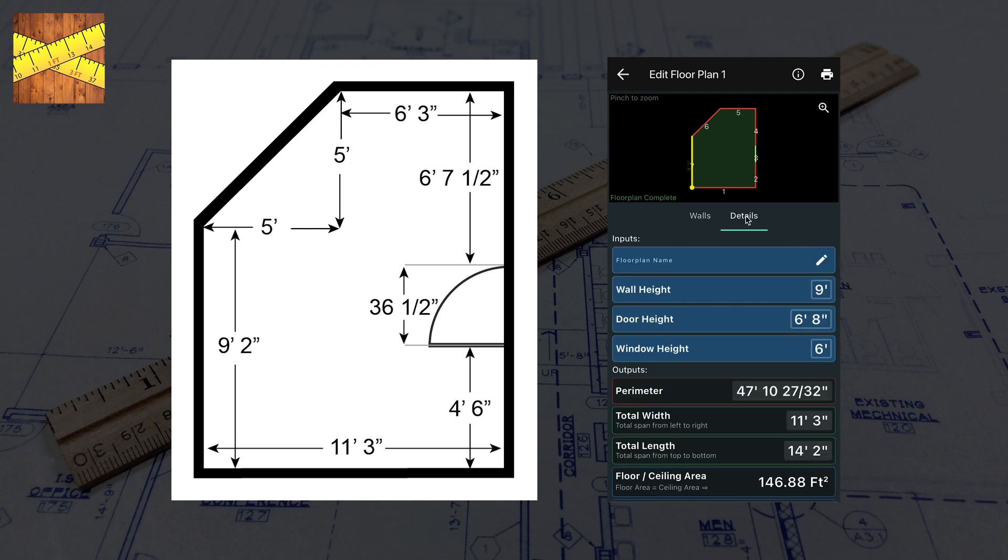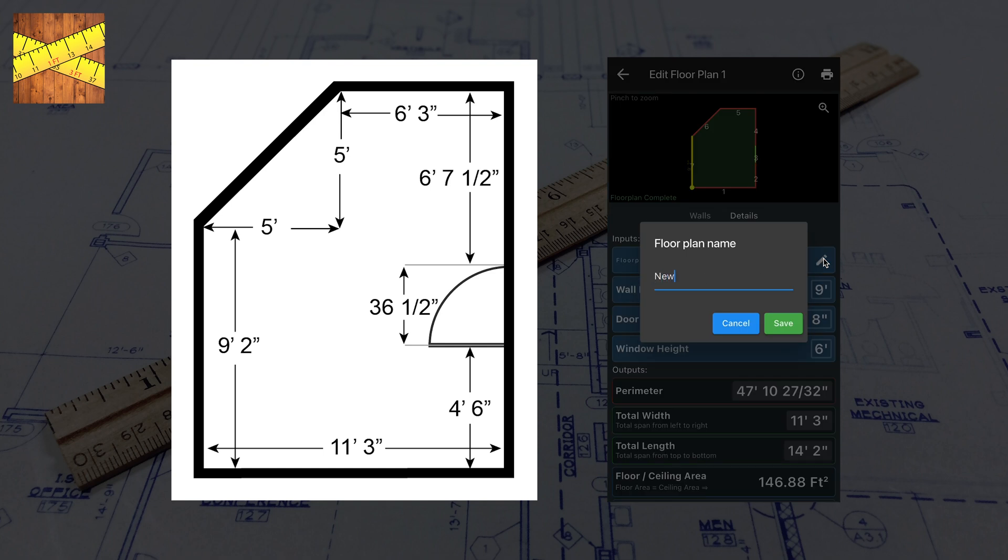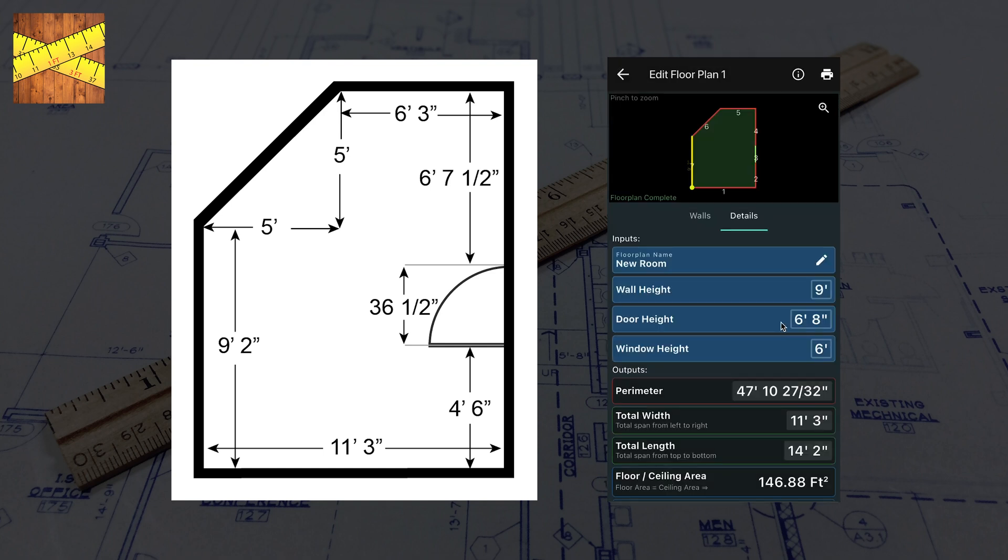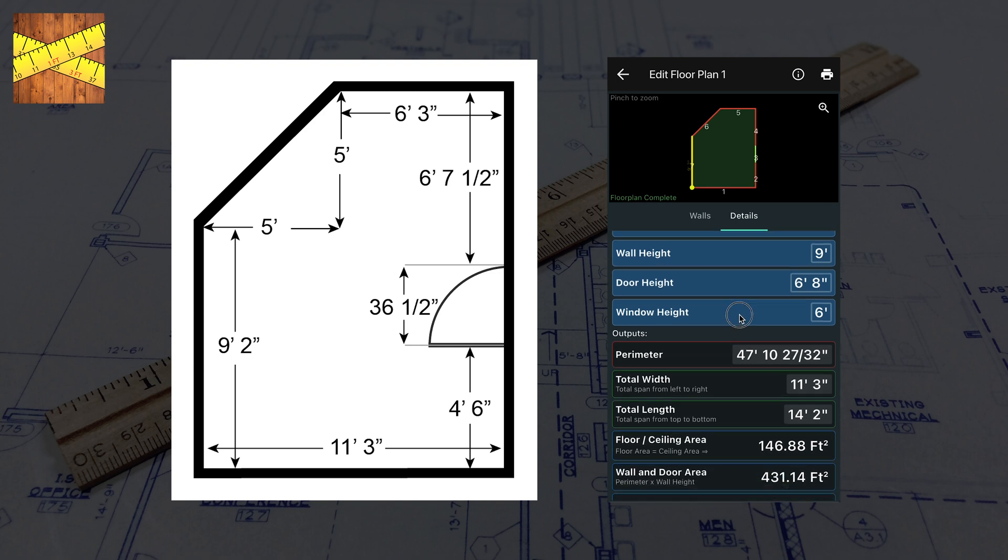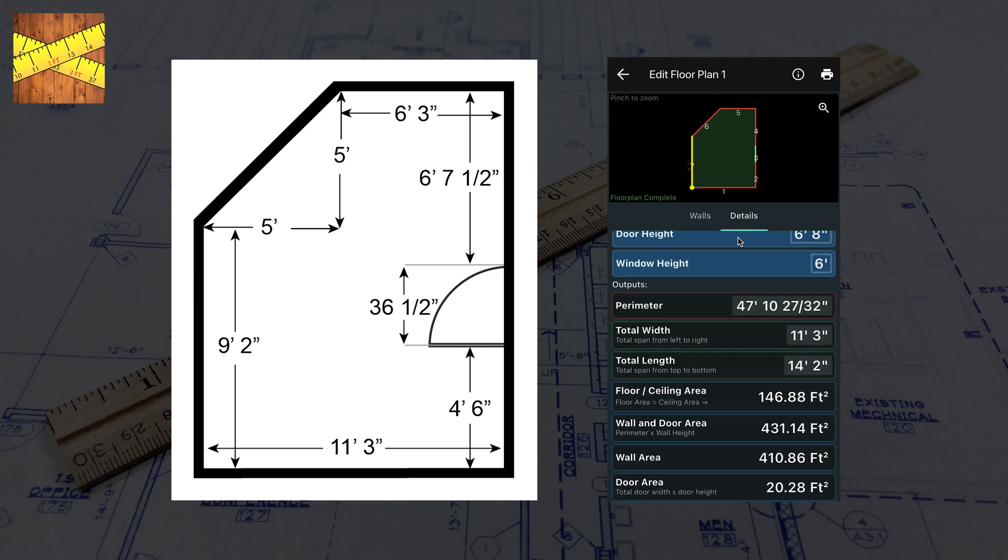Under the Details tab, you will see several inputs and outputs. For inputs, you can name your floor plan and set heights for walls, doors, and windows. For outputs, you will see perimeter, floor area, wall area, and more.